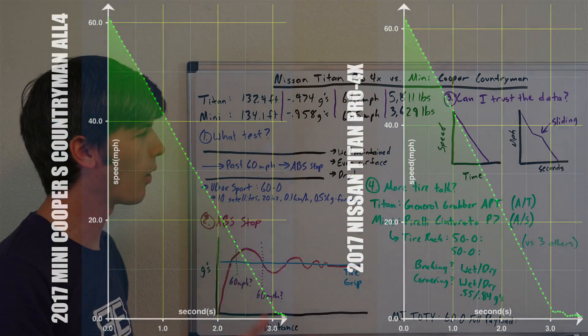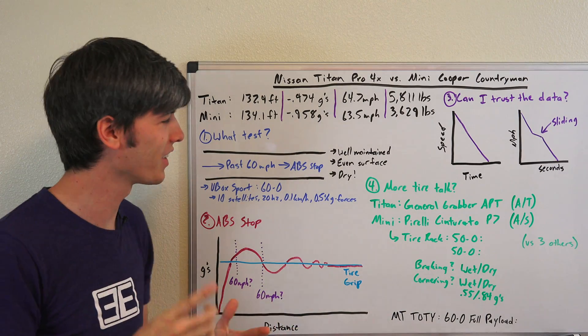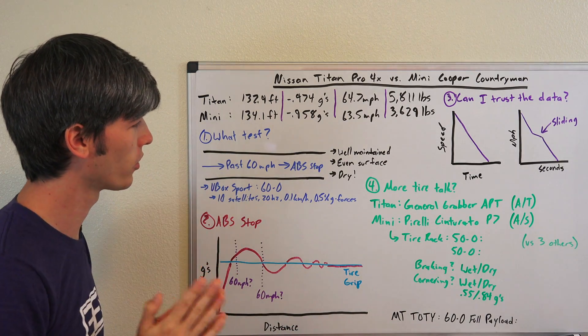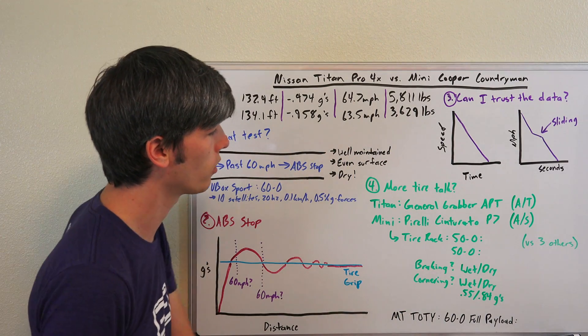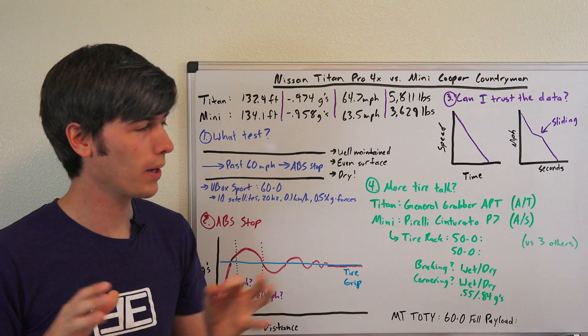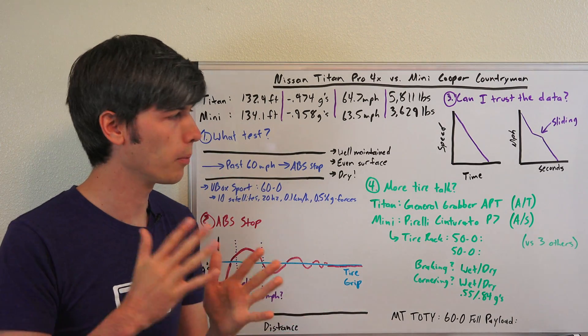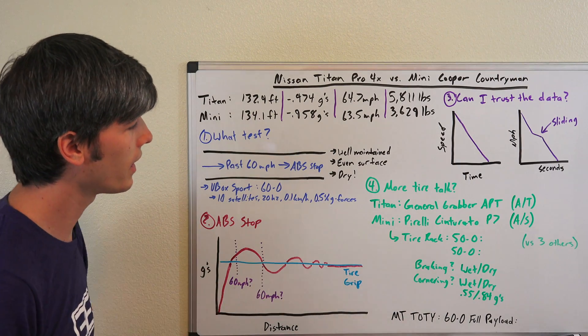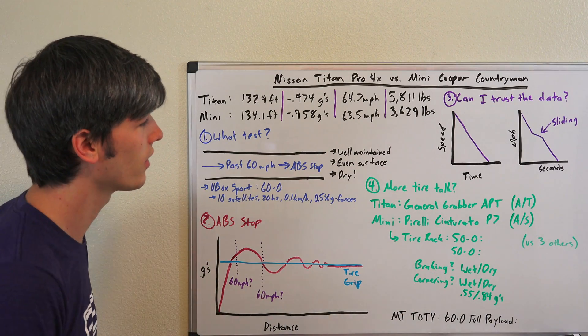Let's continue to talk about tires. The Nissan Titan is on General Grabber APT all-terrain tires, not just made for the road but for off-road as well. The Mini is on Pirelli Cinturato P7 tires, all-season tires, really made for the road, not made for off-road.